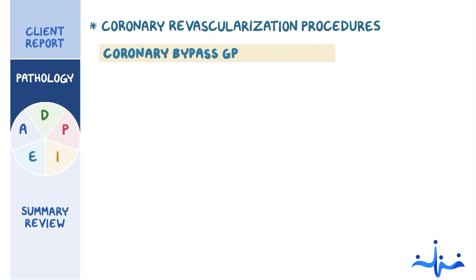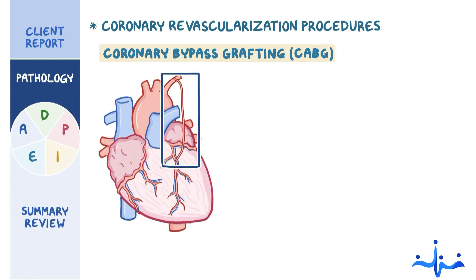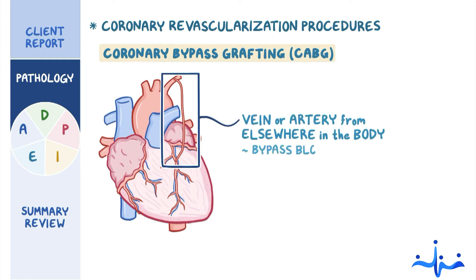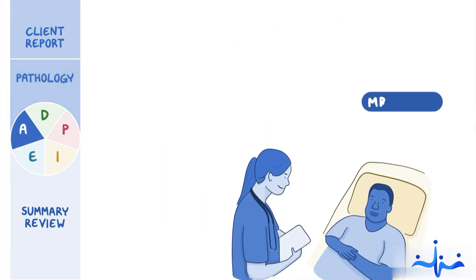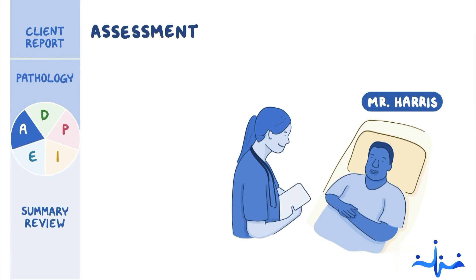Coronary bypass grafting, or CABG, can be done instead of PCI. This is a major surgical procedure that involves using a vein or artery from elsewhere in the body to bypass the blockage and improve myocardial blood flow. Now let's get back to Mr. Harris and begin his assessment.